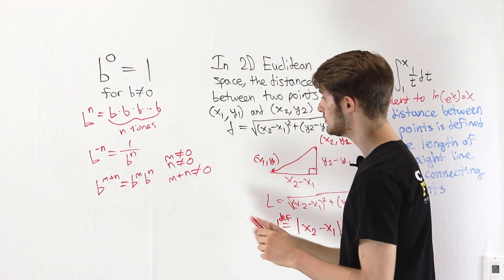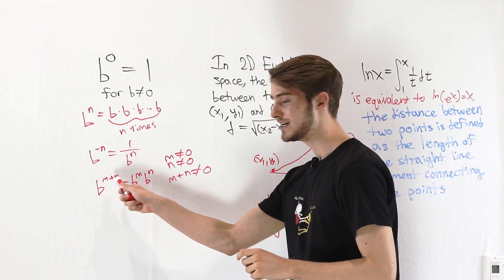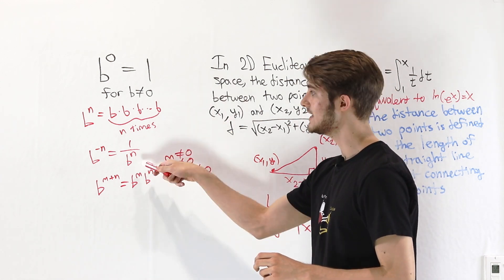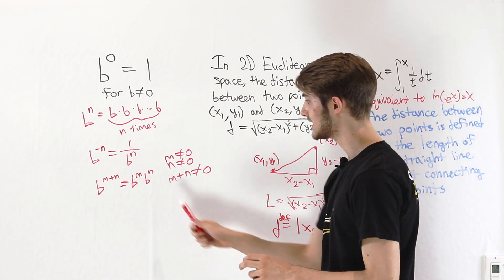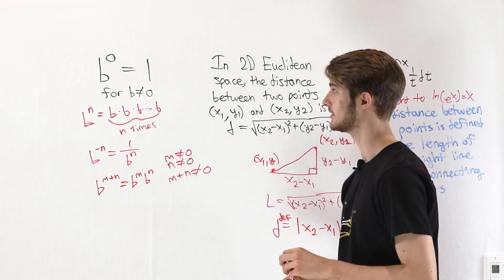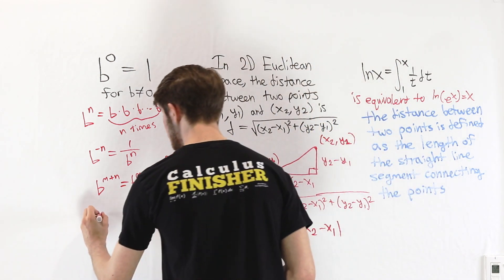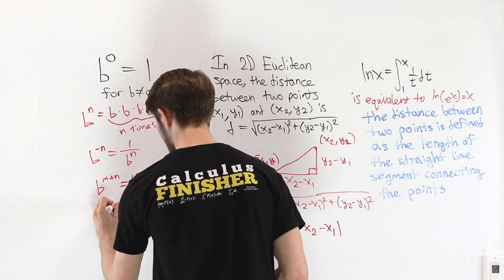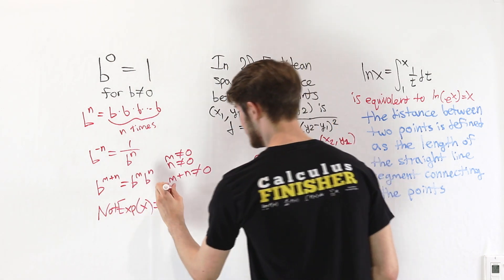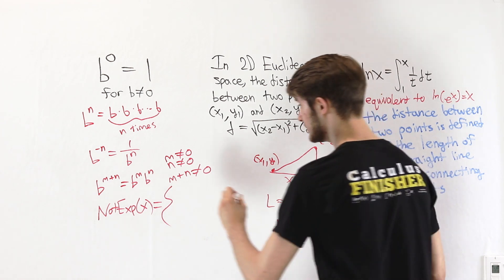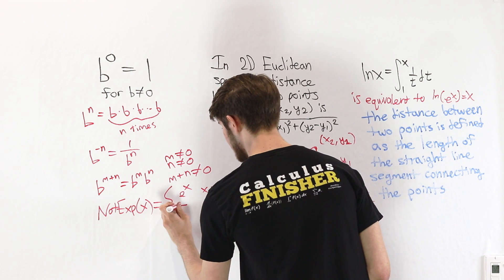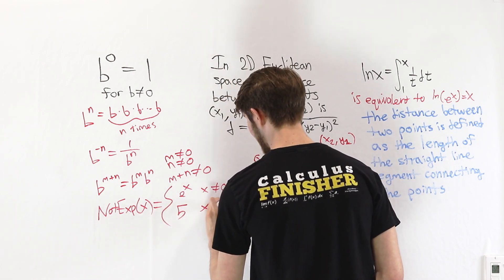The reason for that is as soon as we try to plug in 0 into any of these exponents, we never defined what that meant in our original function. So we can't apply these rules because there's no way to prove what happens at 0. In fact, I could define a completely new function called not exponential of x to equal some piecewise function which is e to the x for all x not equal to 0 but equal to 5 at 0.